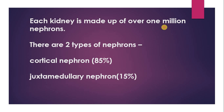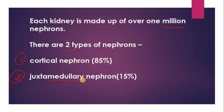Each kidney is made up of around one million nephrons. There are two types of nephrons. The first is the cortical nephron, which is around 85 percent of total nephrons and they are found in the cortex part of the kidney. The second is the juxtamedullary nephron — the portion of the nephron present deep in the medulla of the kidney.